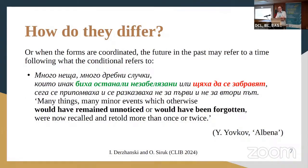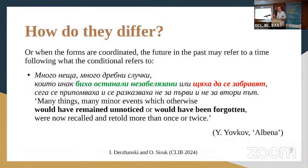Sometimes when the forms are coordinated, the future in the past may refer to a time which follows what the conditional refers to. As in this example: 'many minor events would have remained unnoticed or would have been forgotten.' Arguably, they are remaining unnoticed at the time when they might have been noticed, which precedes the time when they would have been forgotten, because to forget something you have to notice it beforehand. So possibly there is an opposition here, but this is probably not the whole story.